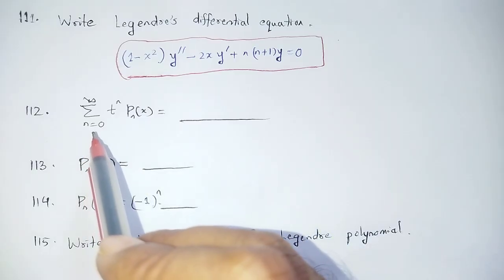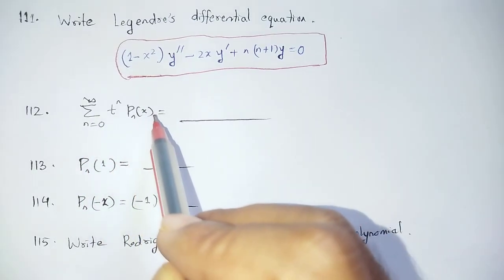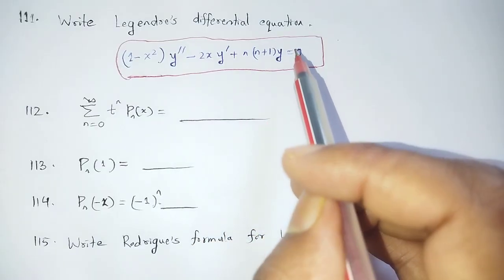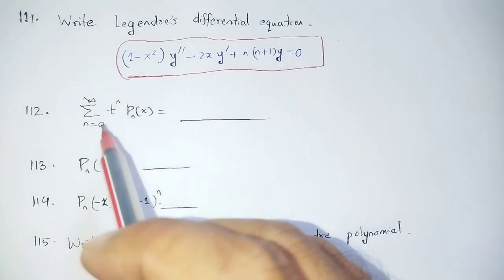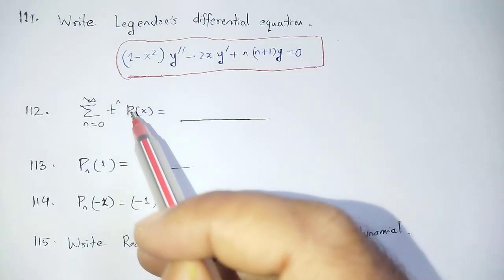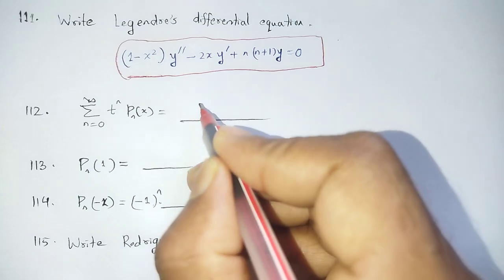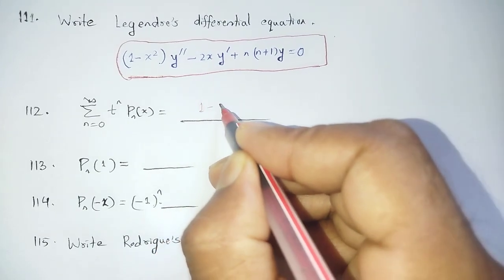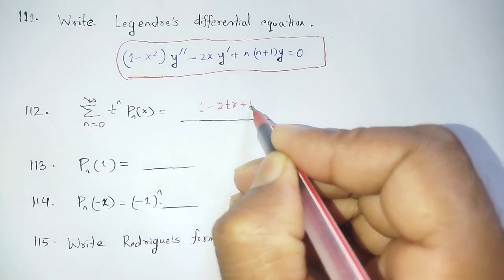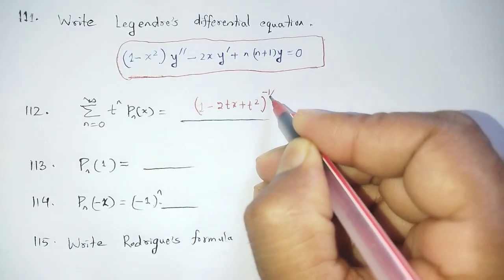The Legendre Polynomial generating function is: summation over n from 0 to infinity of t^n Pn(x) equals (1 - 2tx + t²)^(-1/2). This is the generating function for Legendre Polynomials Pn(x).